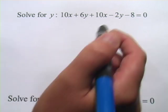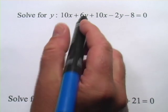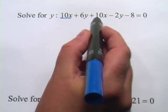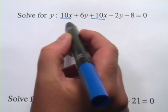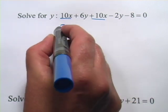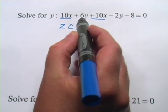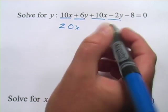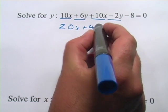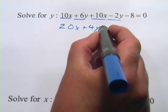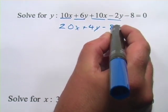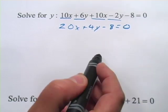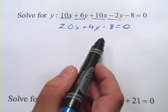Let's start here by combining like terms. We have 10x and 10x, they're both positive, so that would add up to 20x. And then we have a positive 6y and a negative 2y. That would add up to positive 4y. And then we just have our negative 8 over here and equals 0. So all I've done so far is just combine the like terms.